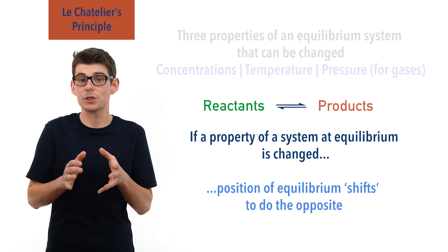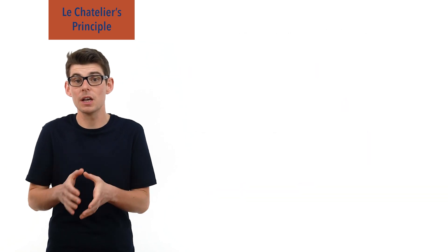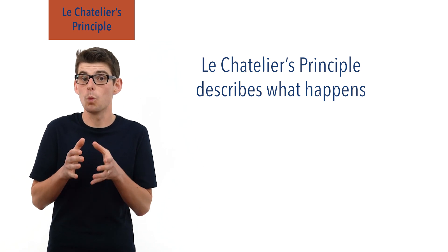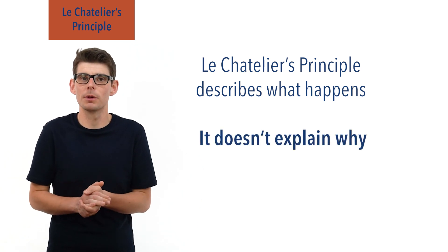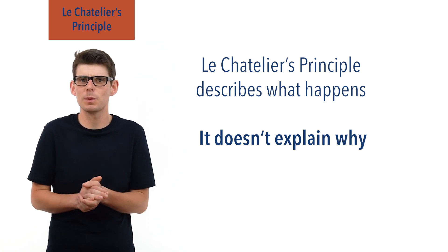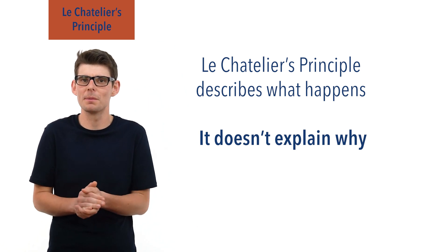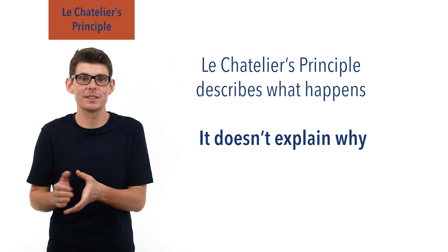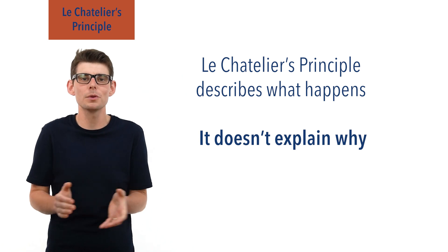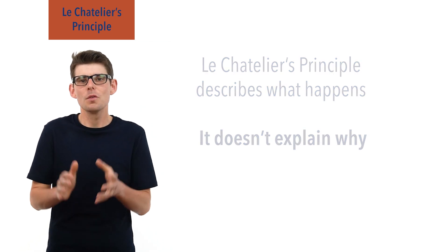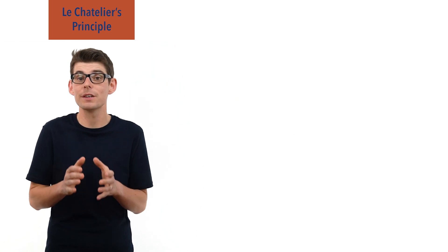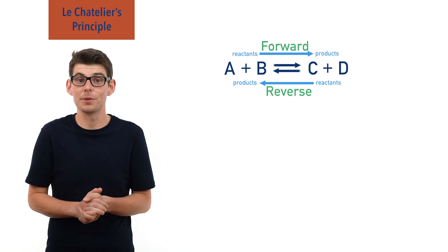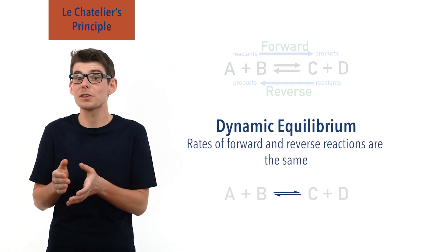Le Châtelier's Principle describes what is observed when changes are made to an equilibrium system. It doesn't, however, explain why. Thinking that a position of equilibrium is trying to change is a bit misleading — positions of equilibrium aren't trying to do anything. Why then does it look like this happens? Remember that it is the rates of the forward and reverse reactions that determine whether a system is at dynamic equilibrium; the rates of both must be the same.